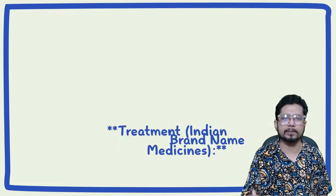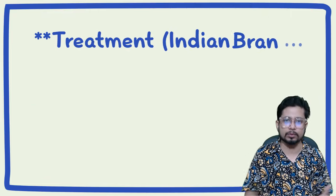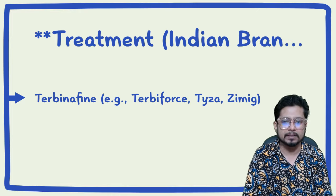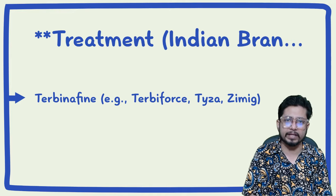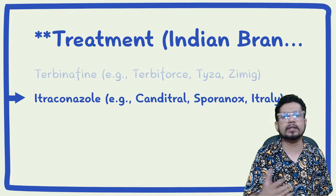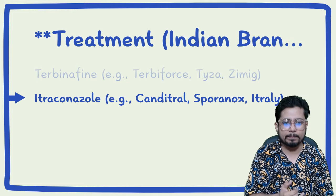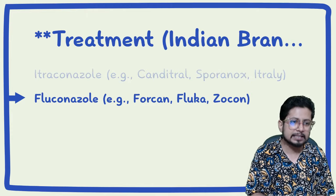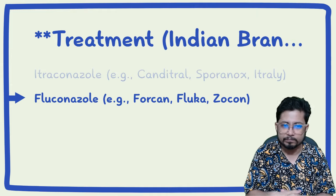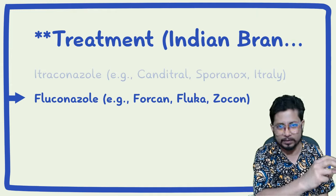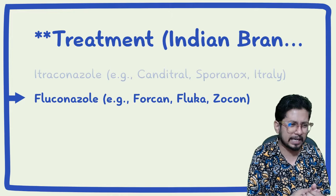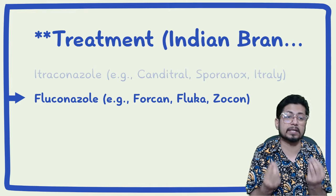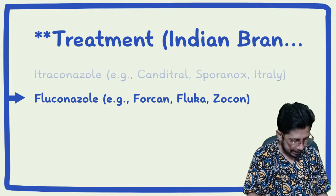For treatment, here are Indian brand name medications used against this infection. Terbinafine — examples include Terbifors, Tiza, and Zimming — works very well against nail fungus infection. Itraconazole antifungal drugs include Candytral, Sporonox, and Itrally. Fluconazole examples include Forcan, Fluca, and Zocon. Fluca and Zocon are commonly used today in tablet format.